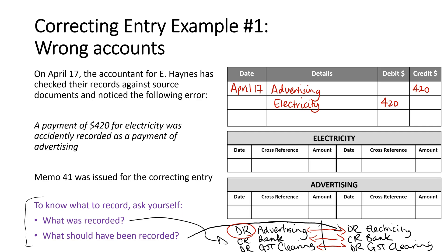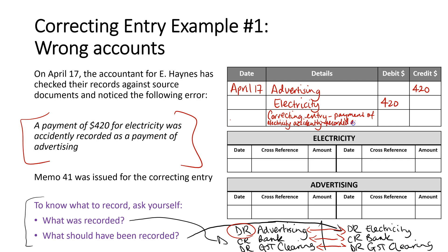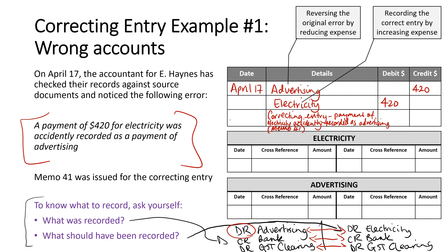Now I need to record my narration where I explain what's happened. I'm going to put 'correcting entry' and then describe what occurred: payment of electricity accidentally recorded as advertising — and of course I need to finish that with Memo 41. So effectively what we've done is reversed that original error by reducing the expense, and then recorded the correct entry by increasing the expense.